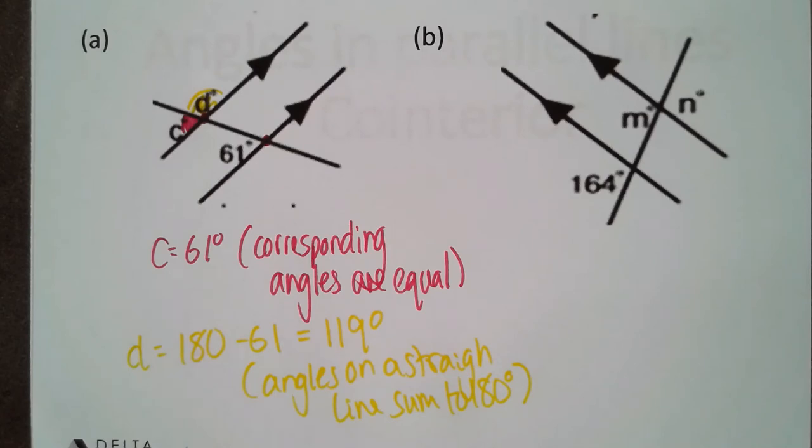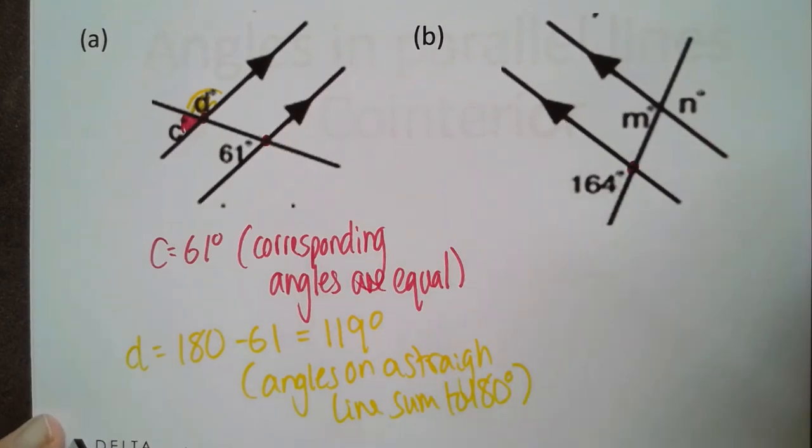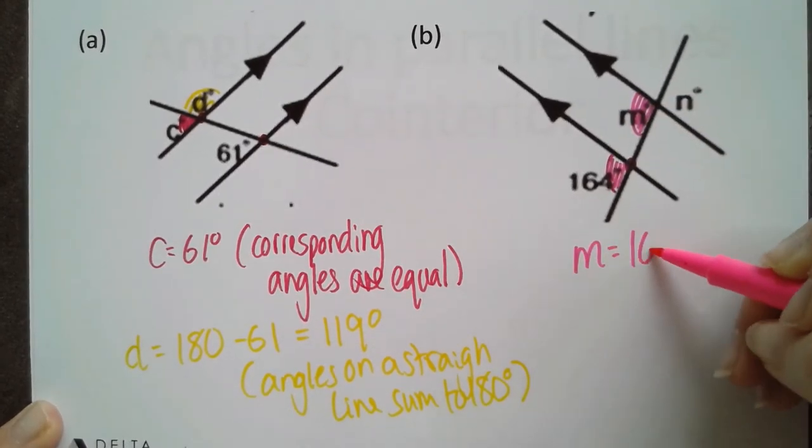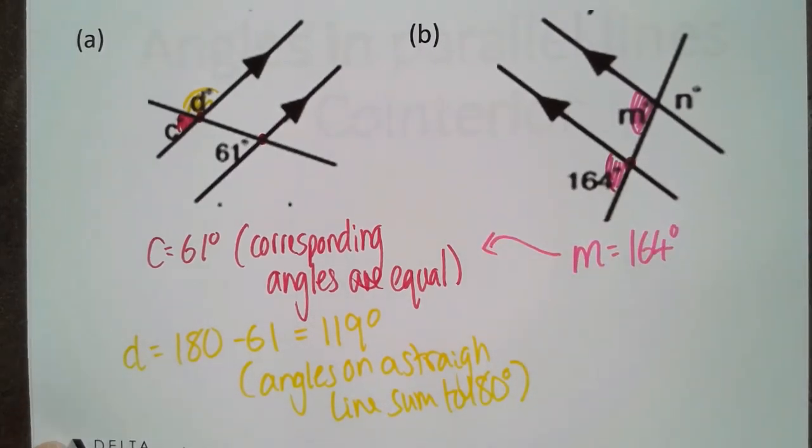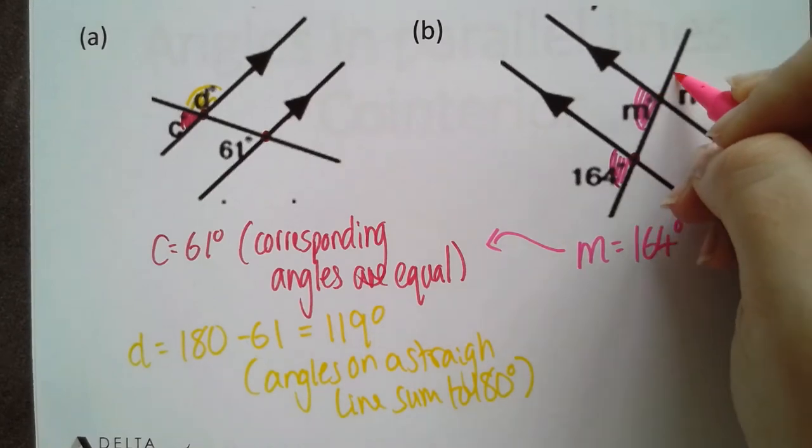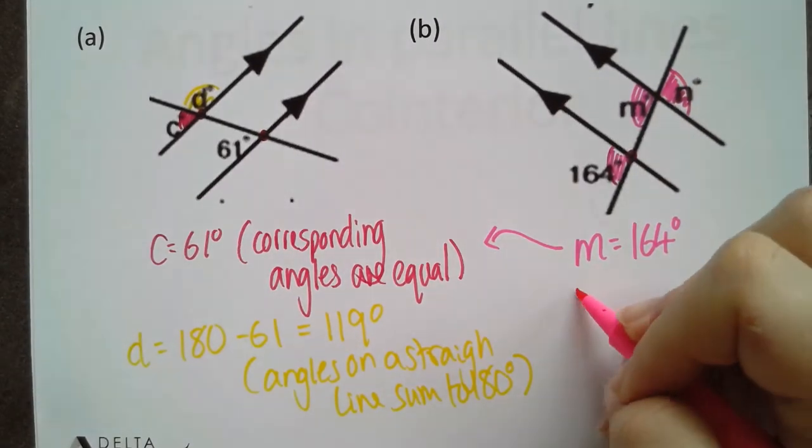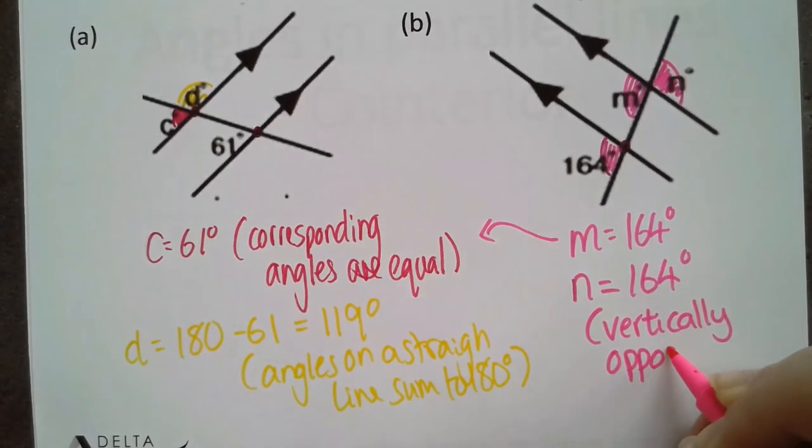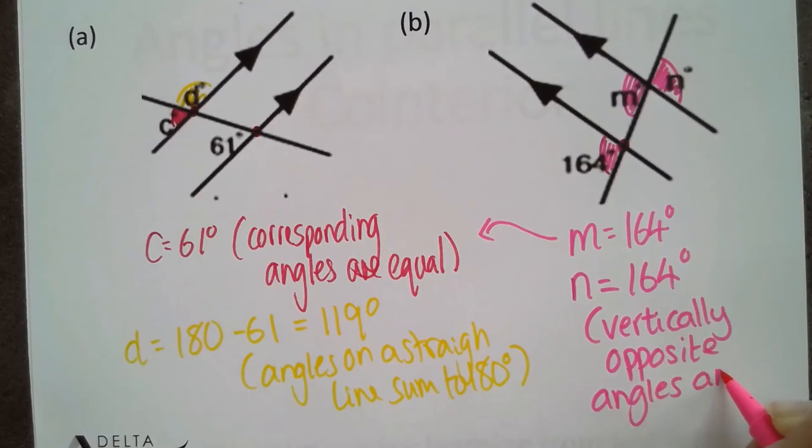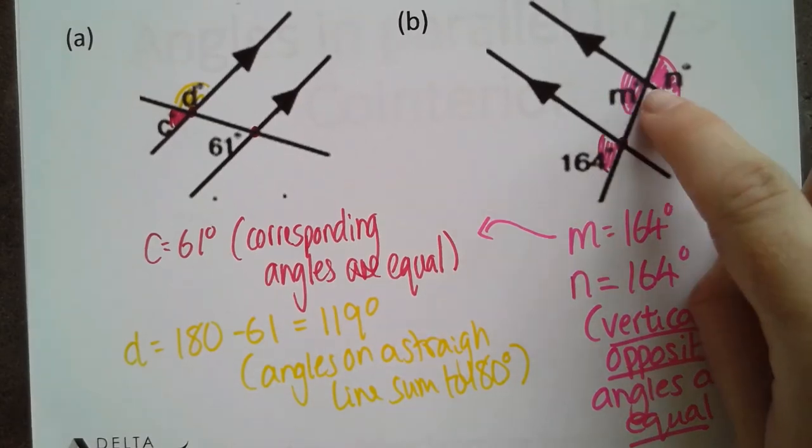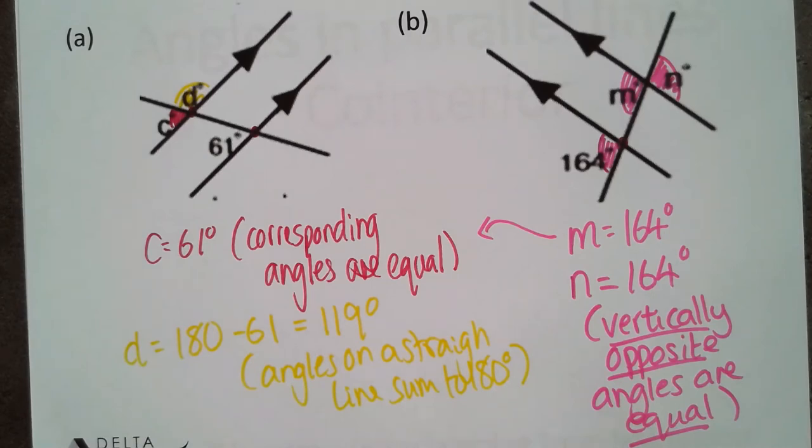From this point it should be really easy for us to find d because we can actually see that c and d are on a straight line. So d is 180 take 61, or 119 degrees, because angles on a straight line sum to 180. Let's try the next one. We've got a really similar setup to the previous question here, so I'm going to start by looking at this vertex and see if I can find anything corresponding here. I can then find out that m is 164, again because corresponding angles are equal. But this n is slightly different. There's a few different ways we can do this one, but actually the quickest and maybe the most obvious is if we've remembered that vertically opposite angles are equal, then we also have this one as 164.